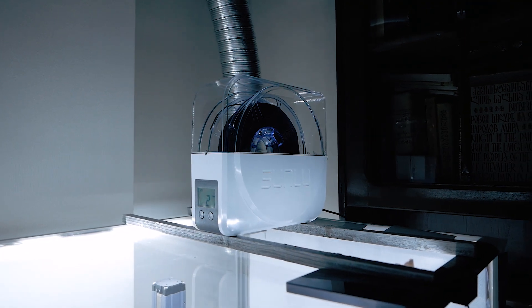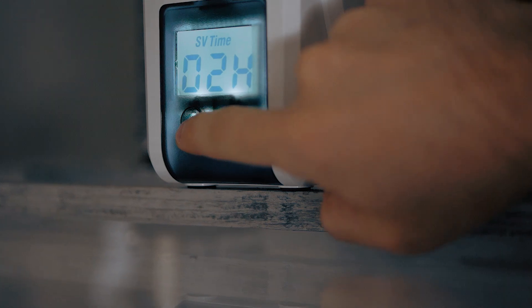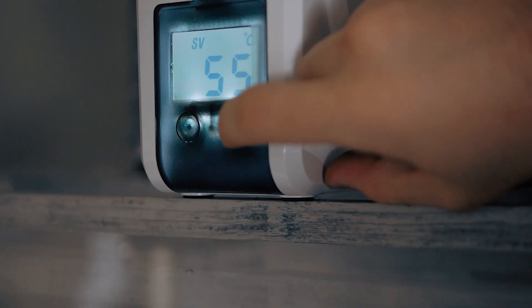Always use a filament dryer before printing TPU. In my case, I use the dryer about two hours at 55 degrees.